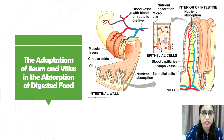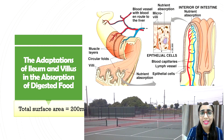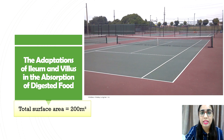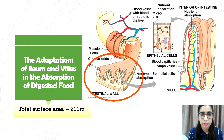The small intestine has a large total surface area of approximately 200 square metres — as big as a tennis court. It is very long, about six metres. The ileum is about three metres. Its wall is folded into the lumen and covered with tiny projections called villi — villus is singular, villi is plural.